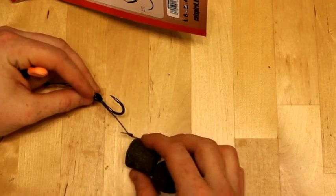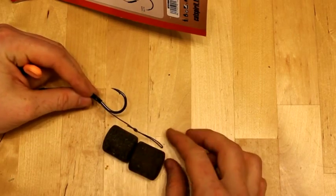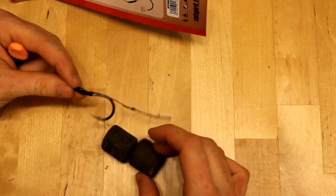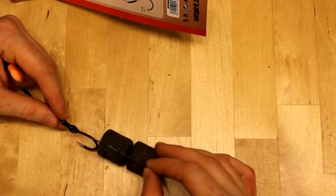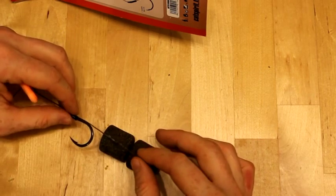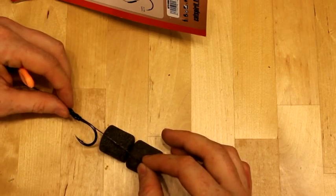So a hair rig is a great way to be able to fish with baits you normally couldn't fish with because they don't fit on a hook, and also for catching fish that are extremely wary, which Wells catfish definitely fall into that category.